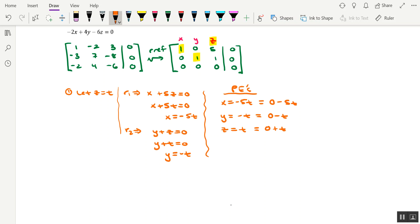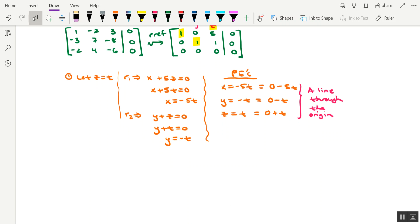Okay, so based on that, our solution space should be a line through the origin. Now if you look at the coefficients of the parameter, we have negative 5, negative 1, and 1. Although it might not be required in some instances, we could describe this line in a little more detail. We could say that it's a line through the origin parallel to, and I'll say the vector v equals, and I'll give the component form of it: negative 5, negative 1, and positive 1.